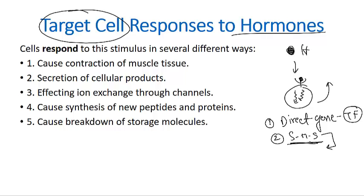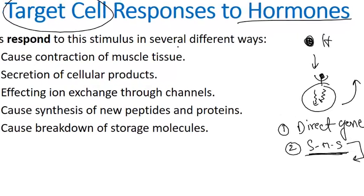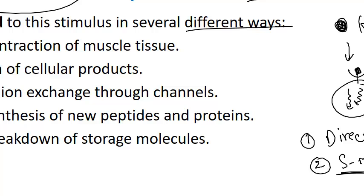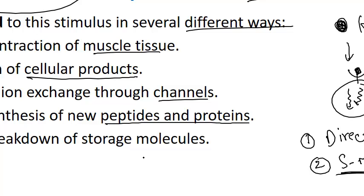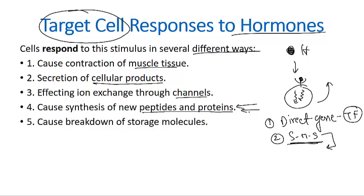In the second messenger system, the hormone is not directly interacting with the gene itself. Cells respond to the stimulus in different ways: contraction of muscle tissue, secretion of cellular products, ion exchange through channels, synthesis of new peptides and proteins inside the cell, and breakdown of storage molecules — all these are effects that follow hormonal activity on a specific target cell.